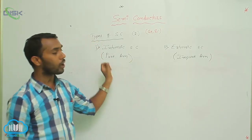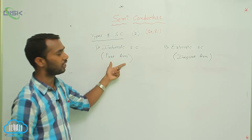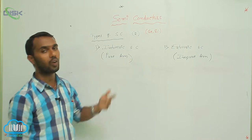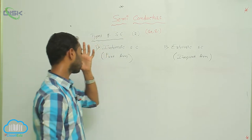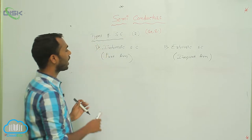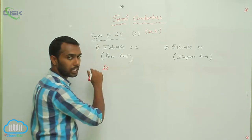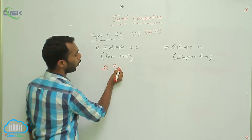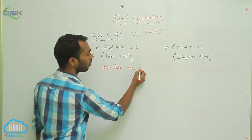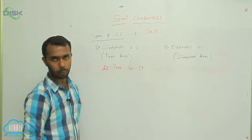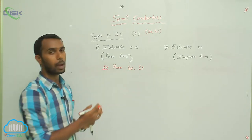Why do we have to add impurities? What is the use of extrinsic semiconductor? The examples of intrinsic semiconductors are pure germanium and pure silicon.